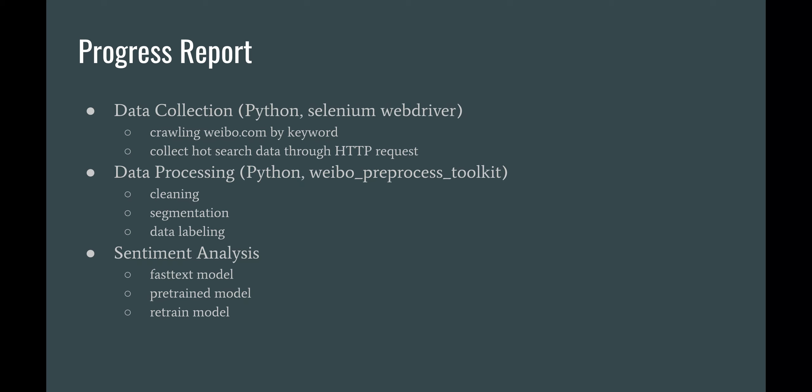In detail, what we've done for data collection is we use Python and Selenium WebDriver to collect data by crawling Weibo.com using certain keywords. We also scrape hot search data through HTTP requests. Through the data processing process, we use Python and the Weibo preprocess toolkit to do cleaning, where we scrape and format HTML raw data. We test six different models for segmentation used to segment and simplify Chinese sentences, and choose the one that performs best.